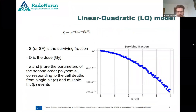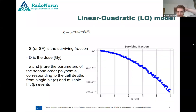The surviving fraction of a cell culture is defined by the linear quadratic model, which is an exponential model based on a second-order polynomial. It has alpha and beta parameters which correspond to the single-hit and multiple-hit events on the DNA in the case of double strand breaks.